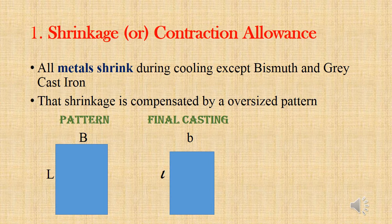The first type of pattern allowance is shrinkage or contraction allowance. All metals will shrink during the cooling process. But some metals like bismuth and grey cast iron will not shrink — instead, they increase in volume. Patterns are made oversized and the final casting is smaller. For a 10 mm cube casting, a slightly bigger pattern is needed to account for shrinkage.